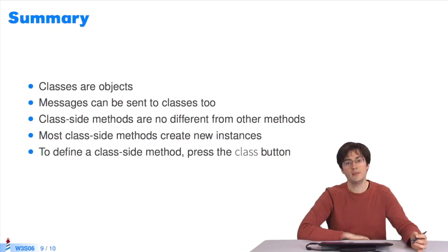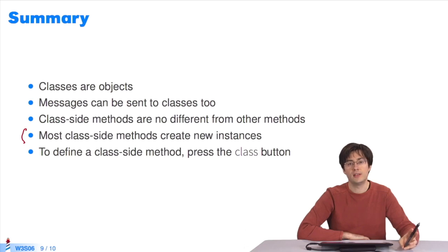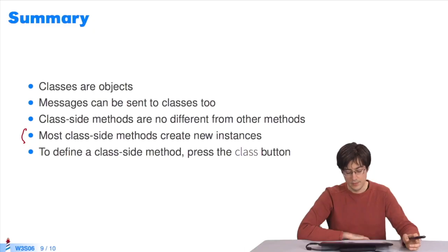To summarize, classes are objects. You can send messages to any objects, so you can send them to any classes too. To implement the corresponding methods, you need to press the button class after selecting a class. Most class methods create not only new instances, but also other things. You will see lots of other uses of class methods in Pharo. Class methods are just like other methods. There are no particular rules. The lookup works exactly in the same way. We will learn about it next week.